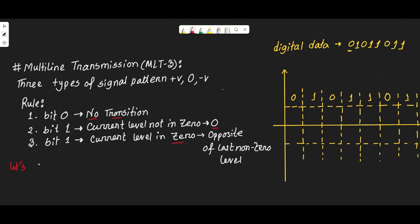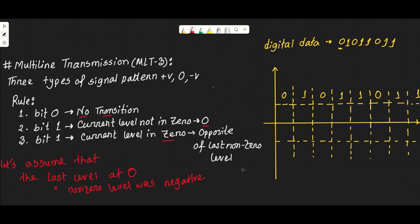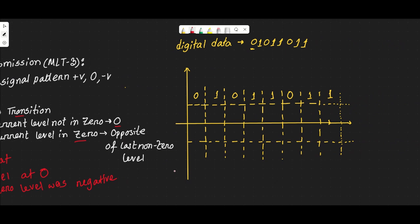Let's use an example. Let's say that the last level is at zero, and the last non-zero level was negative. That means we start at zero and the last non-zero was negative. Let's start the transition.